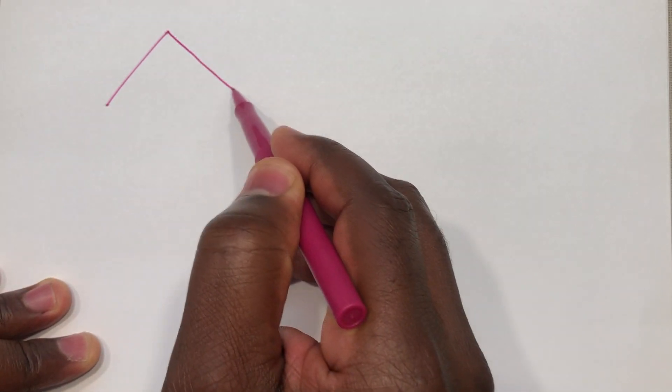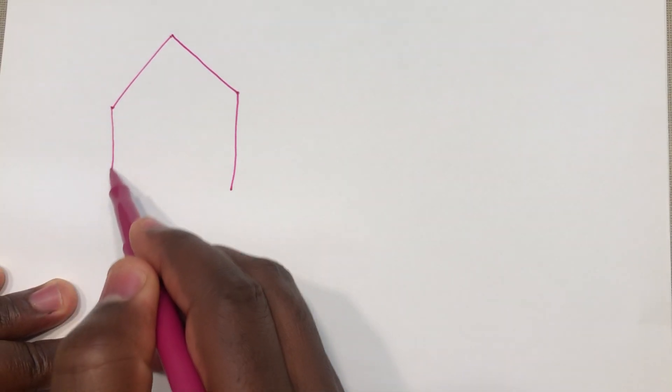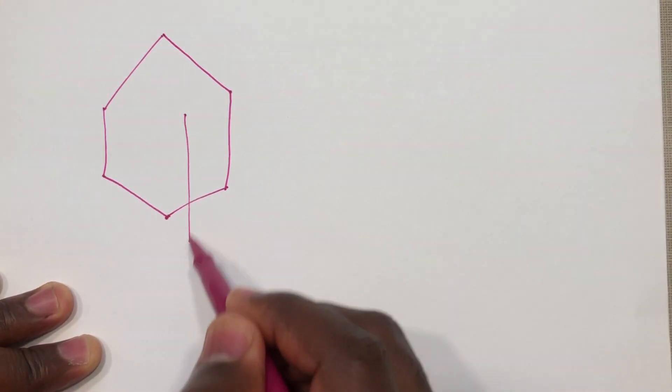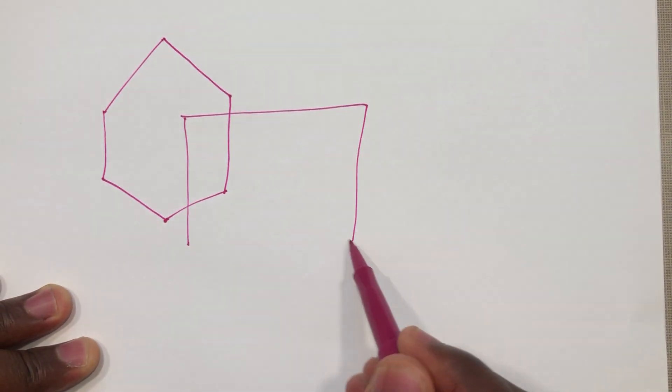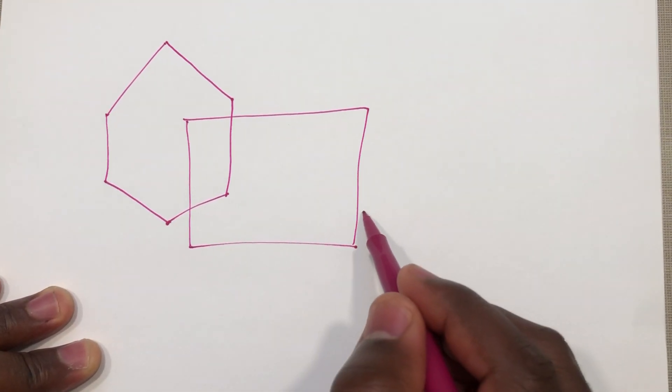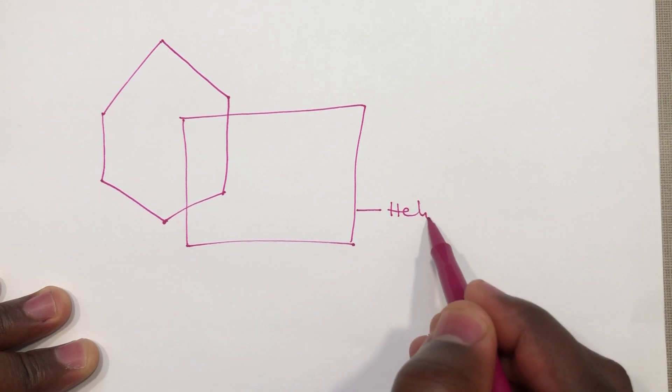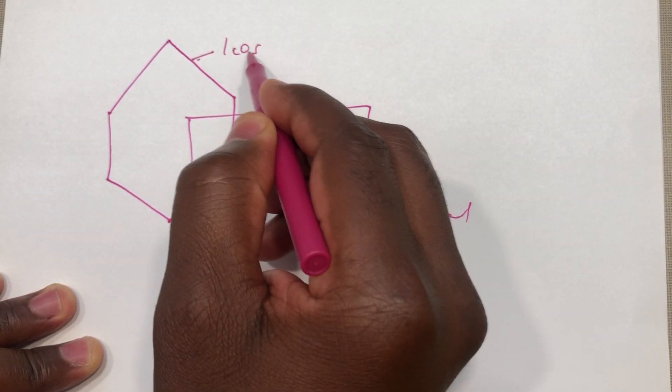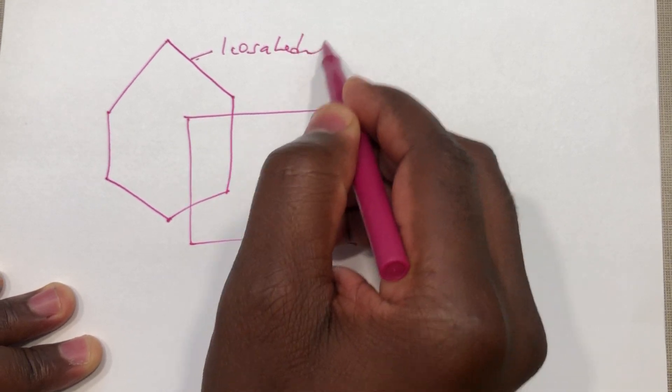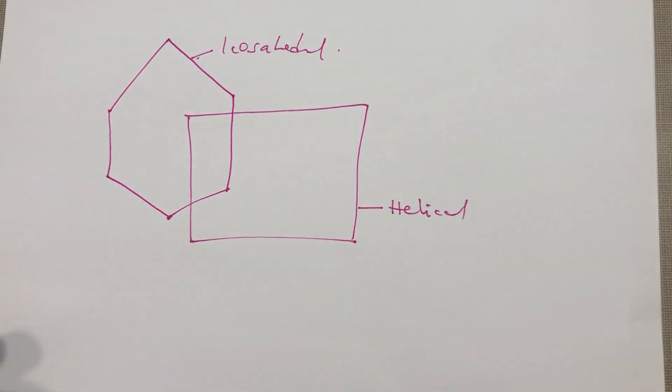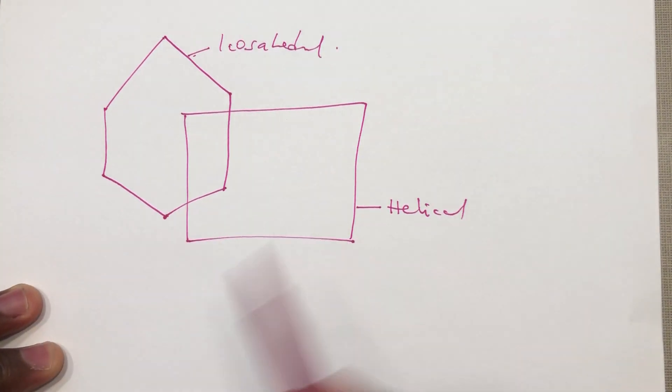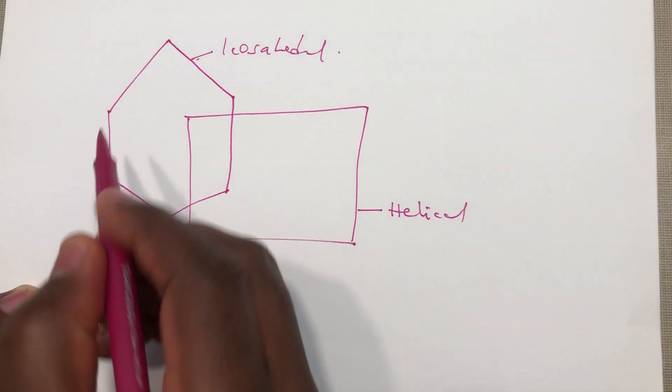Again, I draw this hexagon and this represents the icosahedral ones. I'll draw this envelope representing the helical. So here is helical and this is icosahedral.